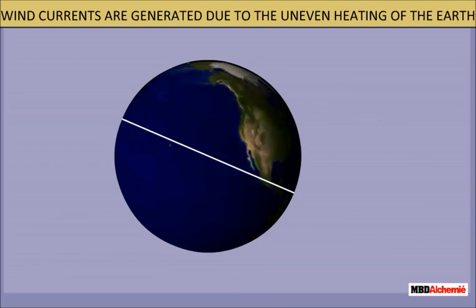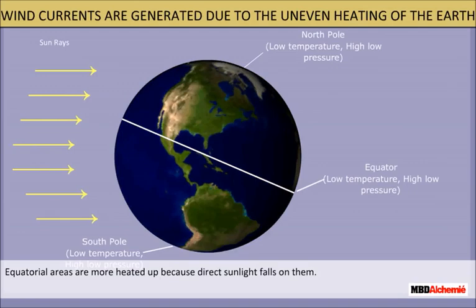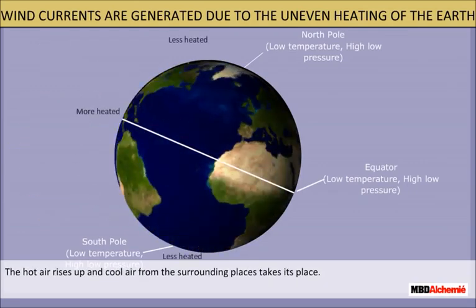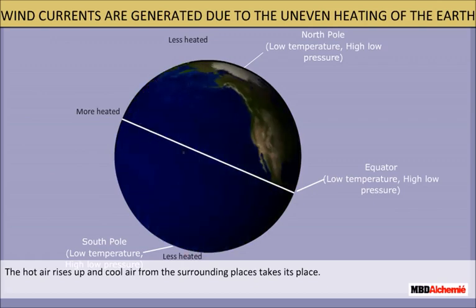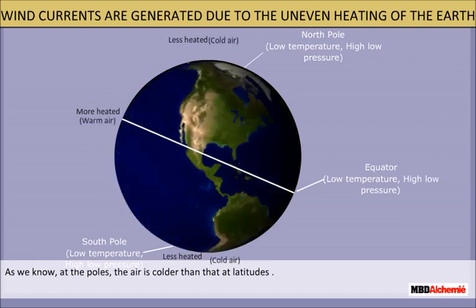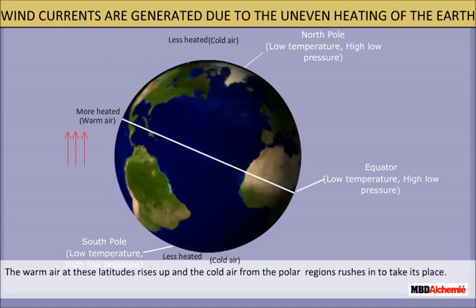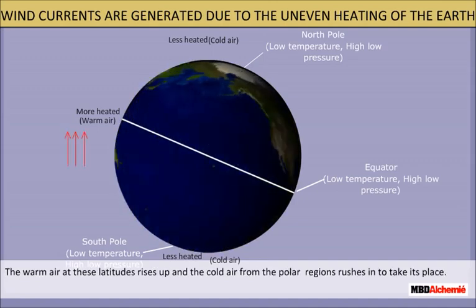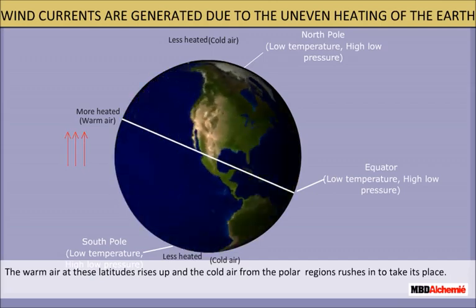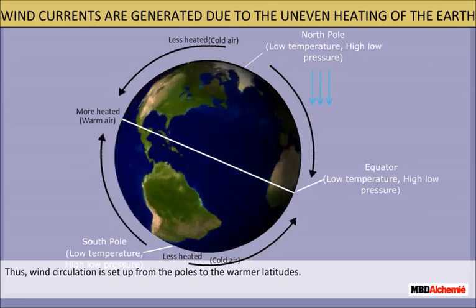Uneven heating between the equator and the poles. Equatorial areas are more heated up because direct sunlight falls on them. The hot air rises up and cool air from surrounding places takes its place, generating wind currents. At the poles, the air is colder than at other latitudes. The warm air at these latitudes rises up and the cold air from the polar regions rushes in to take its place. Thus, wind circulation is set up from the poles to the warmer latitudes.